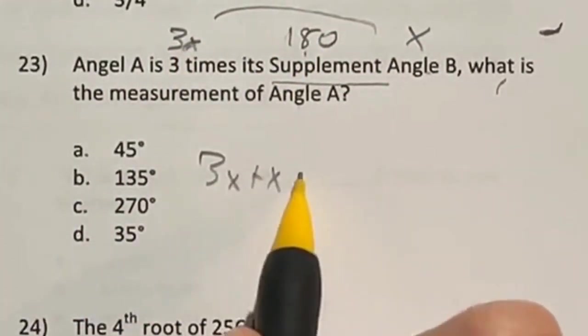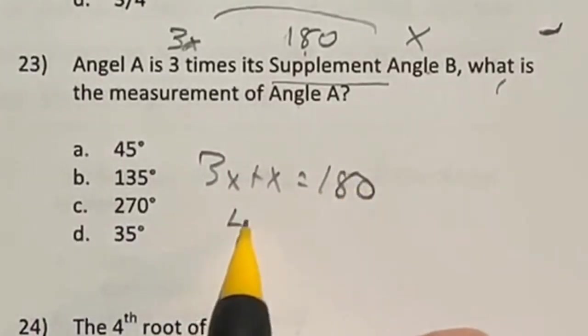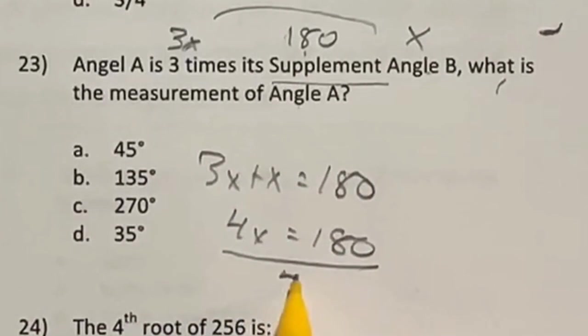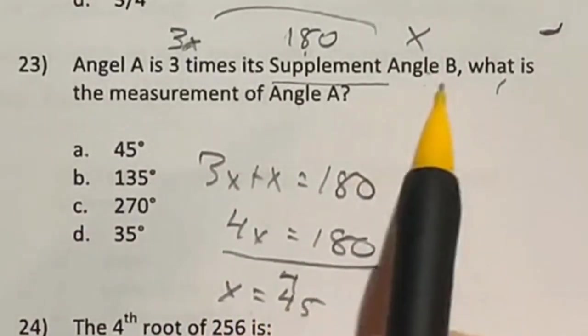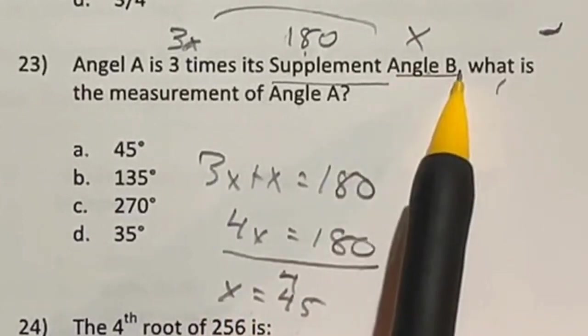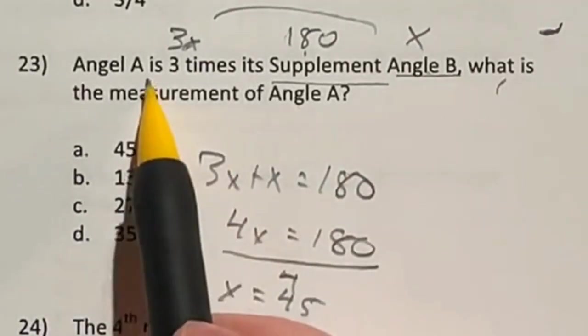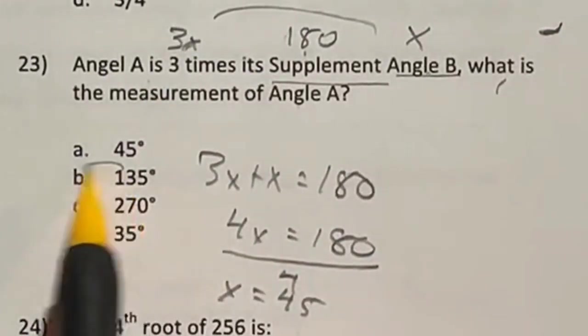So the two of these together need to add to 180. So I have 3X plus X equals 180. Well, that's just going to be 4X equals 180. So we're going to divide both sides by 4. That gives me X is equal to 45. Now be careful because 45 is angle B. We actually need to multiply that by 3 in order to get angle A. So that's actually going to give us an answer of 135.